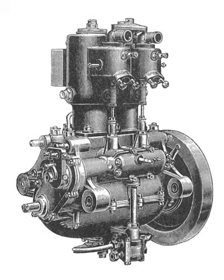Large two-stroke engines do not use crankcase compression, but instead use a separate scavenge blower or supercharger to draw the fuel-air mixture into the compression chamber. Therefore the crankcases are similar to a four-stroke engine in that they are solely used for lubrication purposes.